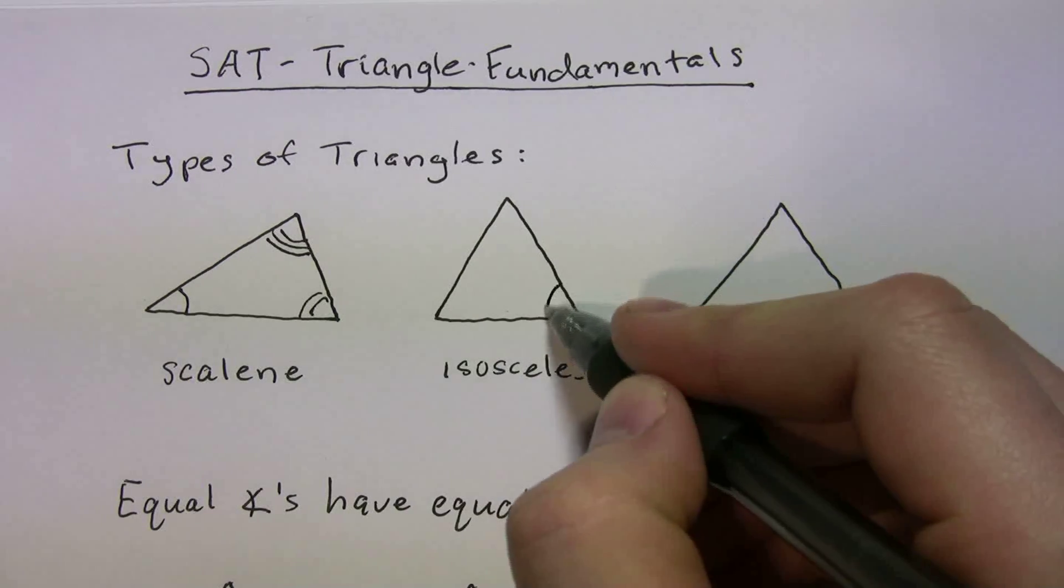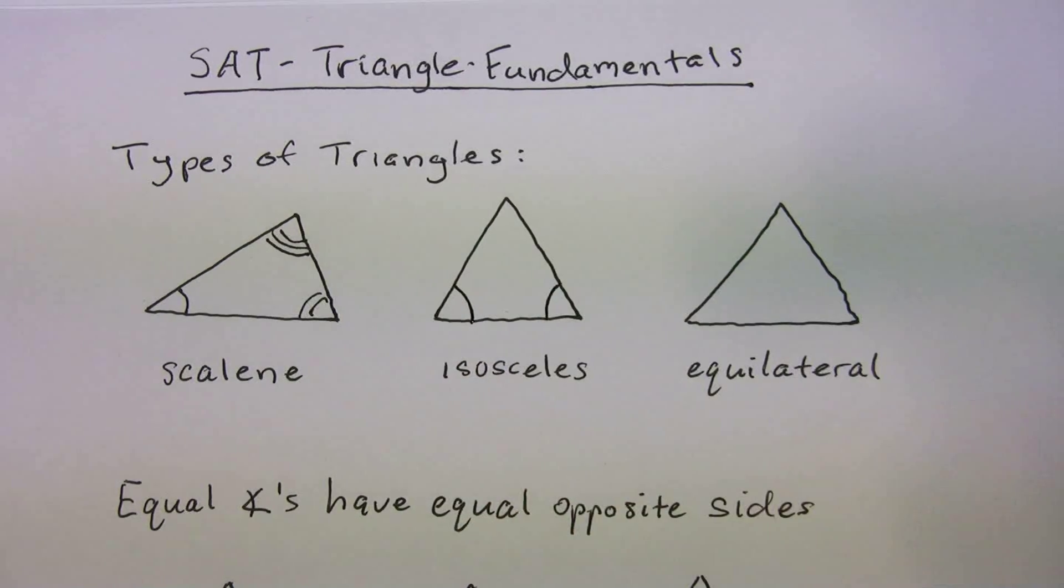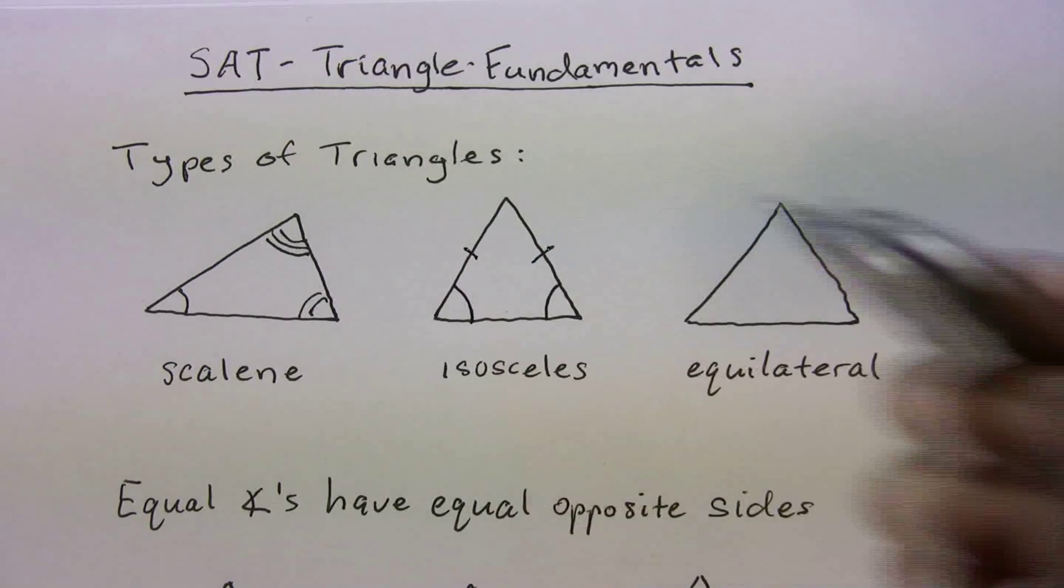Isosceles triangle, that means two of the angles are equal, and if two of the angles are equal, two of the sides are equal.